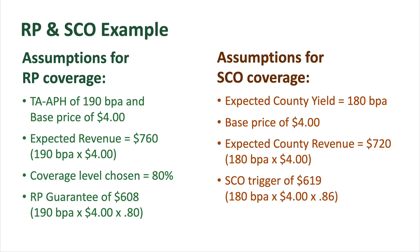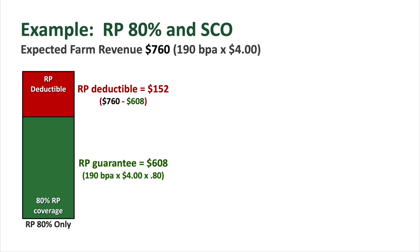Now let's build the SCO coverage. Let's say they're in a county that has an expected county yield of 180 bushels. They use the same $4 price, so that's $720 of expected county revenue. The trigger in SCO is 86%, which would give you a county trigger of $619 in that county.